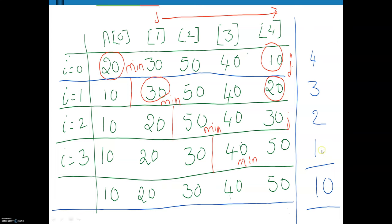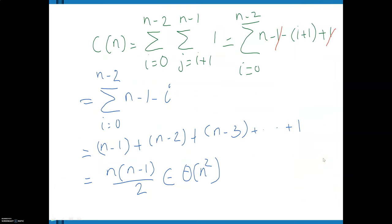This is the sum of natural numbers up to 4, that is 1 to 4. When there are 5 elements, in the first iteration there are 4 comparisons, second has 3, third has 2, and finally 1 comparison. In general, if there are n elements, the first iteration has n minus 1 comparisons, the second has n minus 2, the third has n minus 3, and finally 1 comparison. So it is the sum of natural numbers up to n minus 1, which we will see in the algorithm analysis.